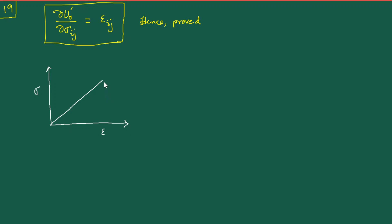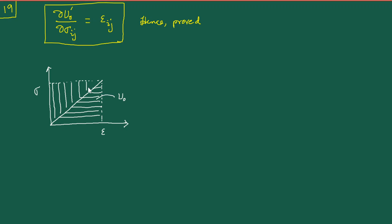In those textbooks, they say that if you consider the area under the curve, that is the strain energy density u⁰. The counterpart area — obtained by dropping a horizontal from the point on the vertical axis — is the complementary energy density u⁰'. For such a linear relationship this is a rectangle split by a diagonal, so u⁰ and u⁰' are perfectly equal.